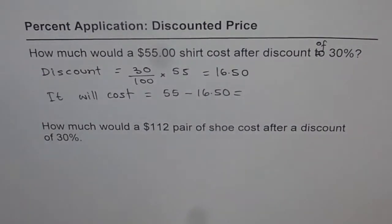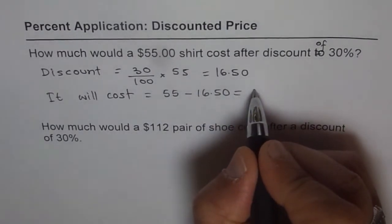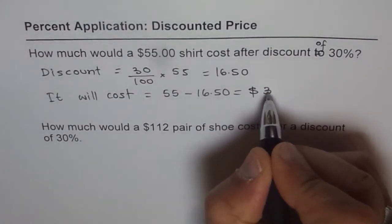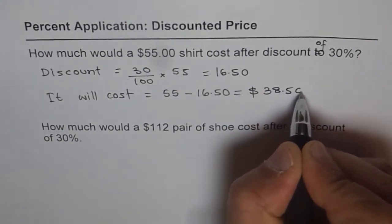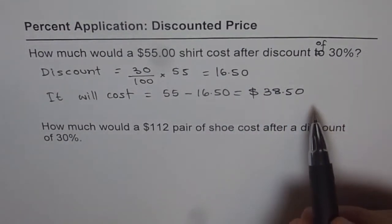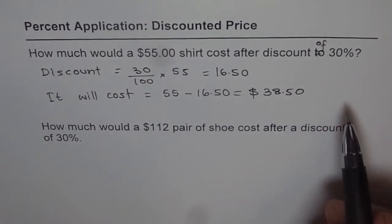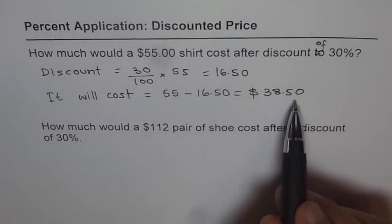We will take away 16.50 from 55 and then we get 38.50. So it's in dollars. Let's write dollars 38.50. Whenever you are talking about money, that is dollars and cents, round your answers to two decimal places.